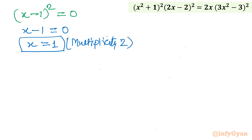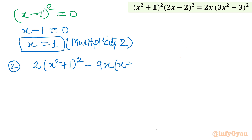Now we solve the second equation: 2(x² + 1)² - 9x(x + 1)² = 0. Let us expand this expression.